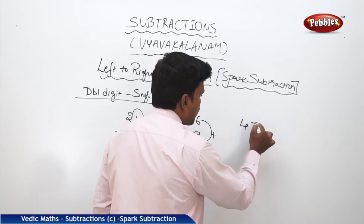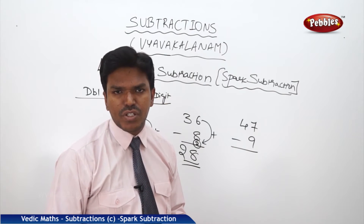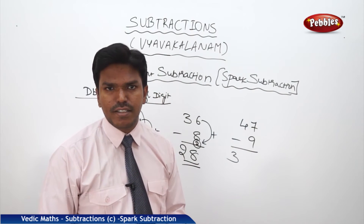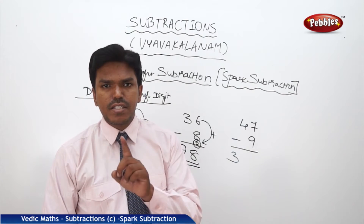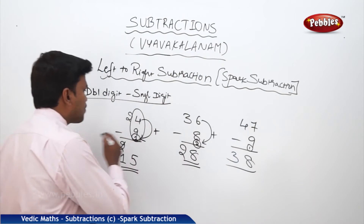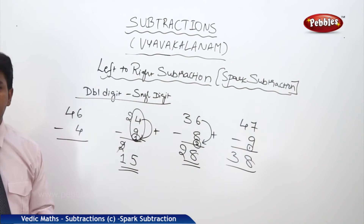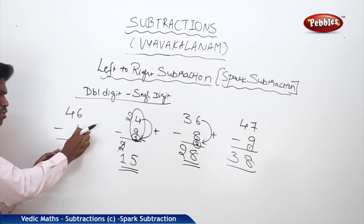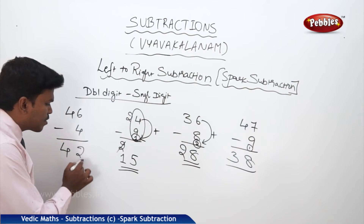Next: 47 minus 9. Start left to right. Before dropping 4, check — next numbers are mismatched. So 4 becomes 3. Since mismatched, bring the above number 7 and add to the 9's complement, which is 1. So 7 plus 1 equals 8. Answer is 38. Similarly, 46 minus 4: before dropping 4, check next numbers — they are match this time. No need to reduce. So 6 minus 4 directly equals 2. Answer is 42.